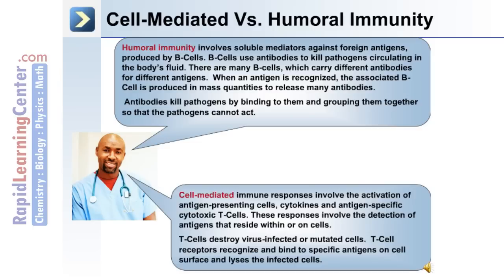Antibodies kill pathogens by binding to them and grouping them together so that the pathogens cannot act. In cell-mediated immune responses, this involves the action of antigen-presenting cells, cytokines, and antigen-specific cytotoxic T cells. These responses involve the detection of antigens that reside within or on the surface of cells. T cells destroy virus-infected or mutated cells, and the T cell receptor recognizes and binds to specific antigens on the cell surface and lyses the infected cells.